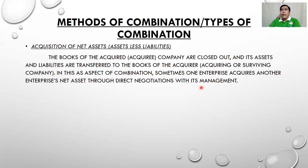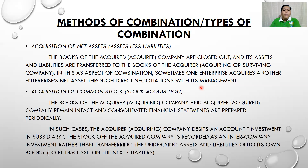Another reason for business combination: some small companies, if they want to grow or expand but have no capacity to do so, sometimes offer themselves to bigger companies in order to gather the capital needed to expand their business. The second type of combination is the acquisition of common stock or stock acquisition. In this case, the books of both the acquirer and acquiree remain intact and consolidated financial statements are prepared periodically — this will be explained further in succeeding chapters.